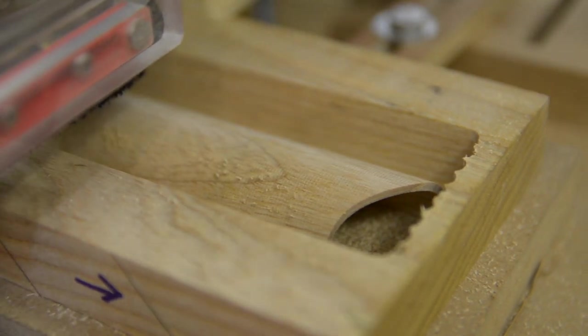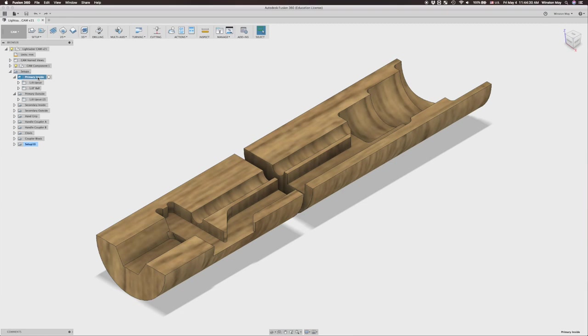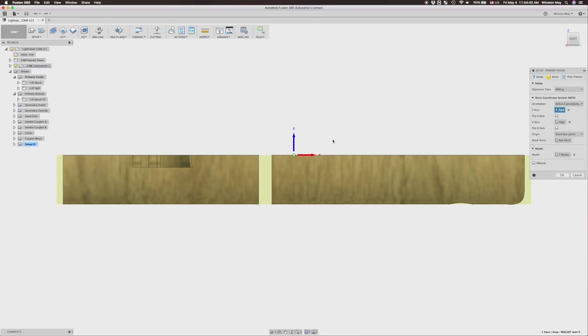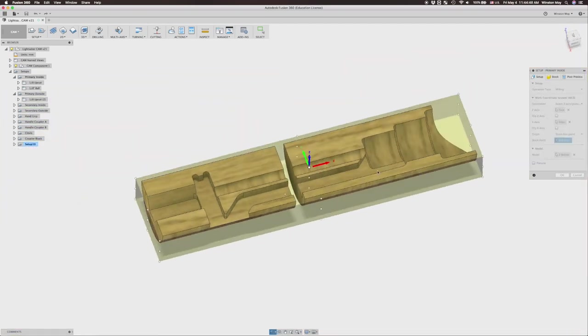Let's take a look at the CAM process for one half of my lightsaber. My stock setup assumes that I have a block of wood faced to have a machine level surface to start from. This top face will be my z-height reference for all operations. My XY origin point will be the center of the bounding box that contains my model.